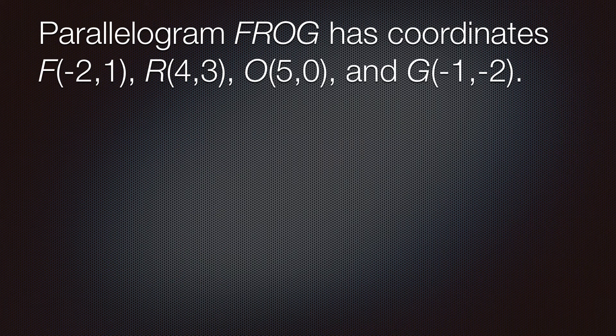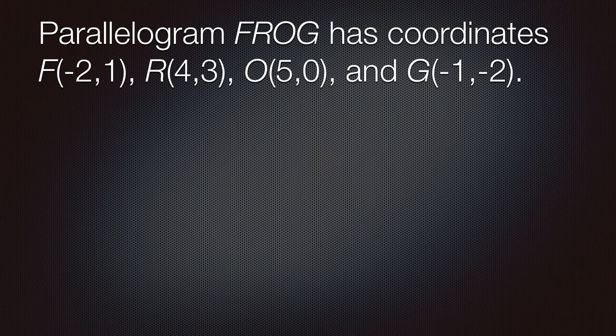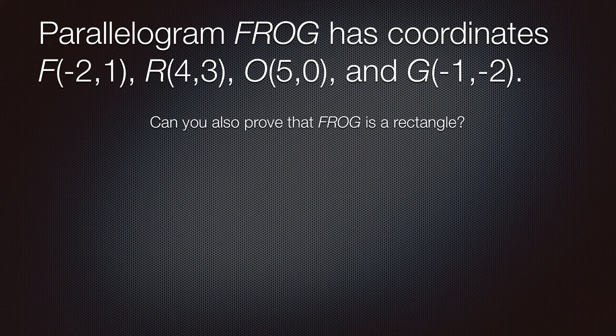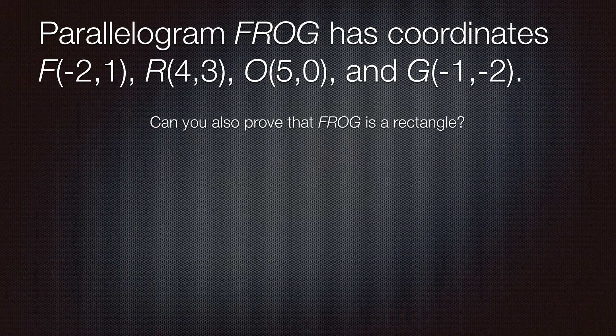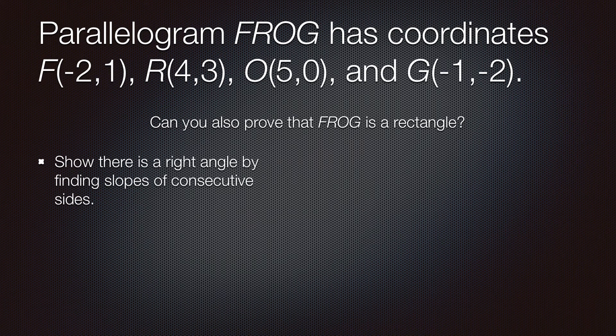Let's say we have a parallelogram, FROG, and it has these coordinates. Can we prove that FROG is also a rectangle? Well, if it's a parallelogram, we already know that the opposite sides are parallel, that the opposite sides are congruent, and that the diagonals bisect each other. And so, instead, we need to look further.